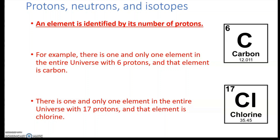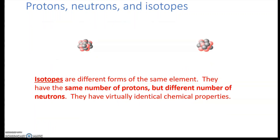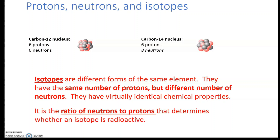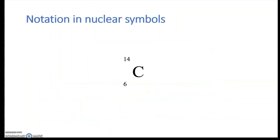Within elements there are isotopes — different forms of the same element that have the same number of protons but different numbers of neutrons. For example, carbon-12 has six protons and six neutrons, while carbon-14 has six protons and eight neutrons. It's the ratio of neutrons to protons that determines whether an isotope is radioactive. Carbon-14 is radioactive whereas carbon-12 is not.